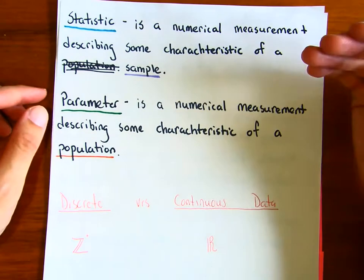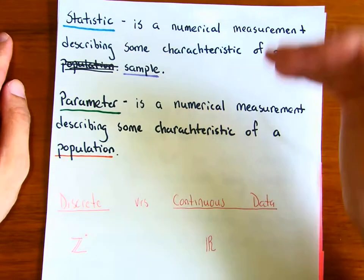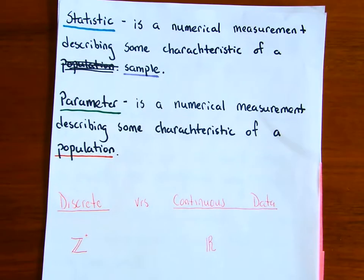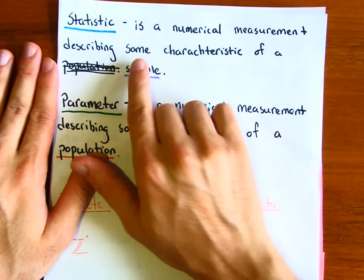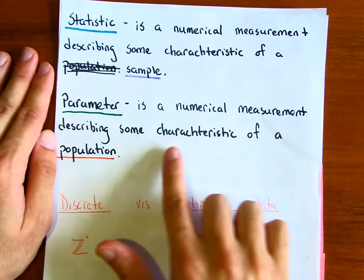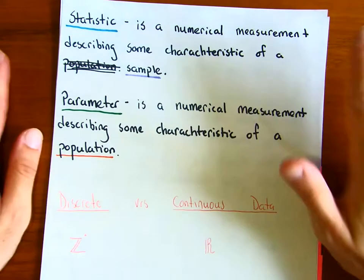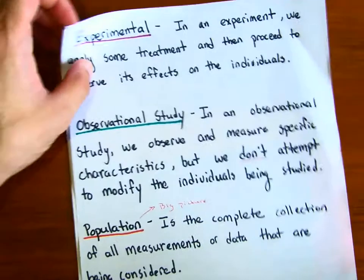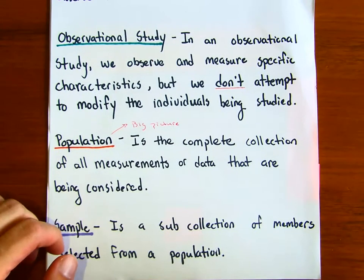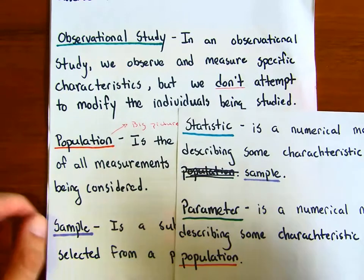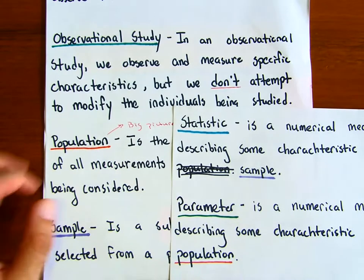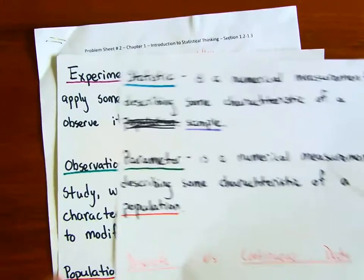Pause the video and copy the definitions for statistic and parameter. A statistic is a numerical measurement describing some characteristic of a sample. A parameter is a numerical measurement describing some characteristic of a population. Whenever you see the word statistic, think about the sample; for parameter, think about the population.